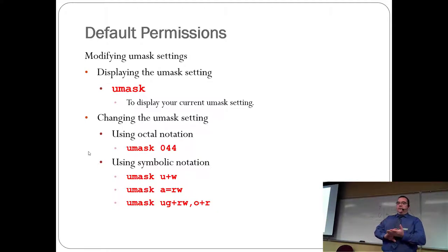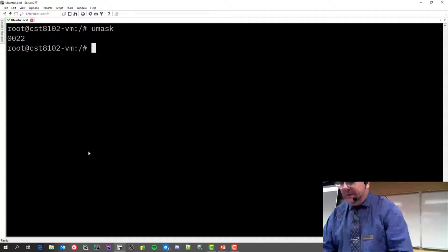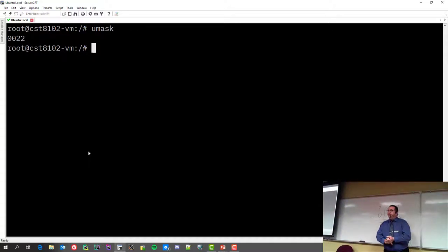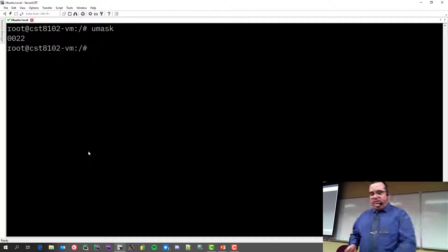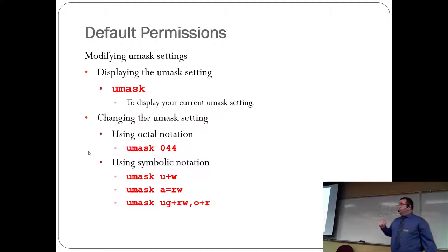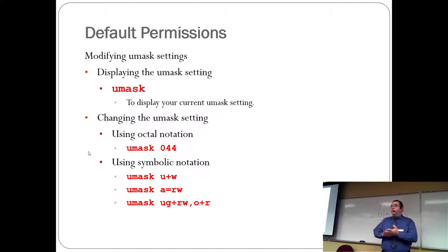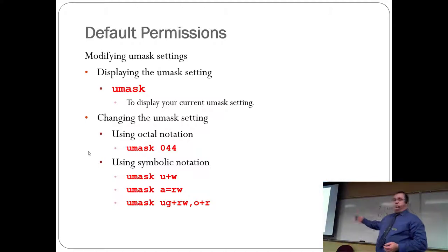To display your umask setting, type 'umask'. The default umask for everyone on Linux is 0022. You can change it — for example, 'umask 044' means instead of 22, it'll be 44, taking 4 away from 7 making the effective permission 3. You can also use symbolic notation: 'umask u+w' means the user is always allowed to write; 'umask a=rw' means everybody can read and write.